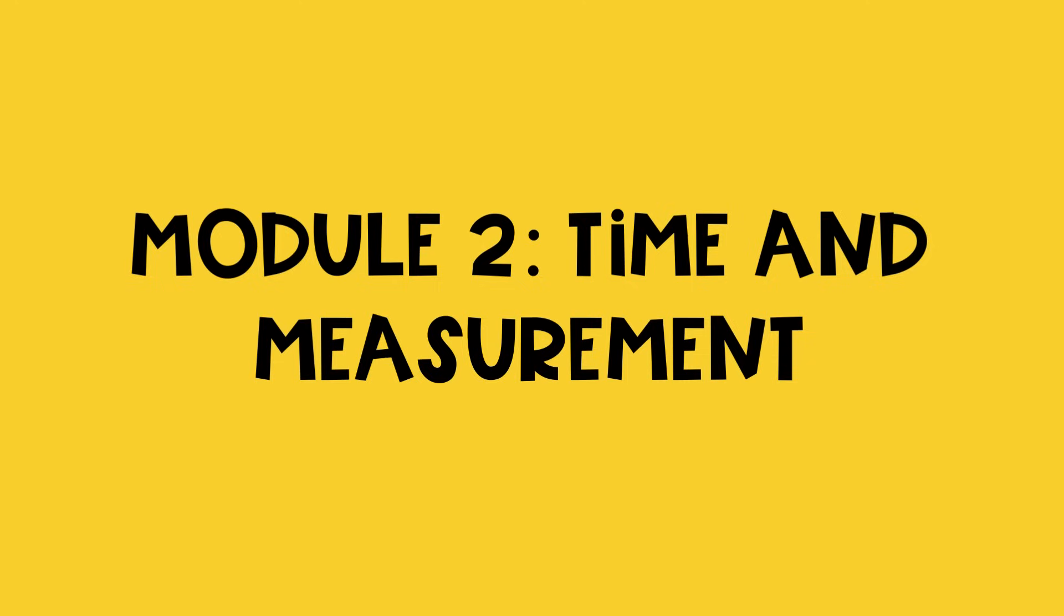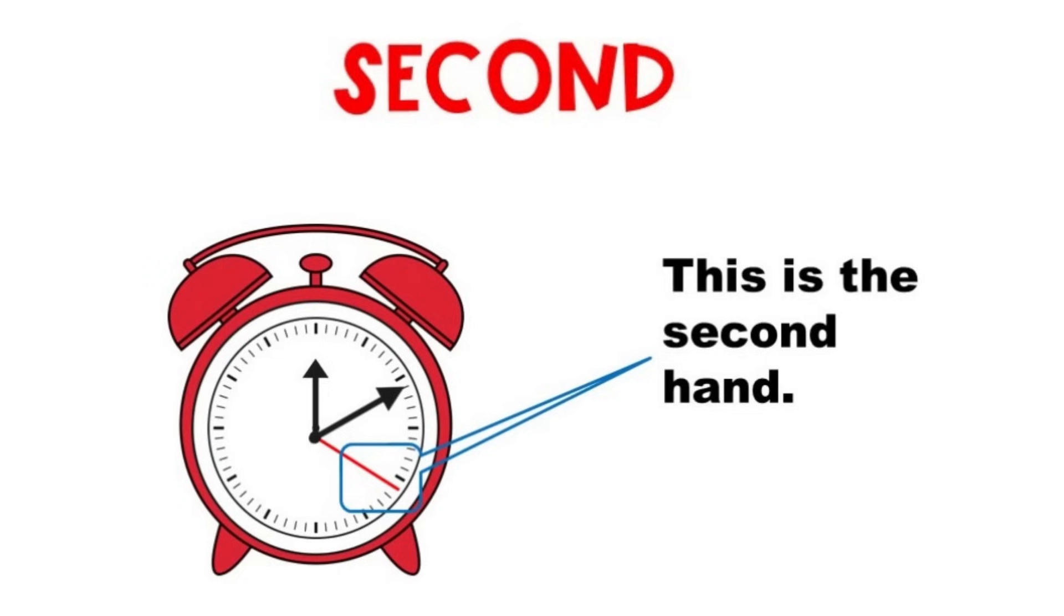Module 2: Time and Measurement. This is the second hand. There are 60 seconds in one minute.